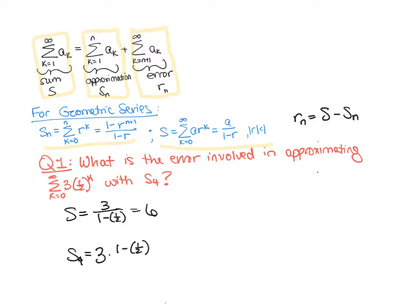S sub four we're going to want to simplify a little bit. So this is combining the three with the one minus a half on the bottom, just like S we get a six, and then that's going to be multiplied by one minus one half to the fifth.